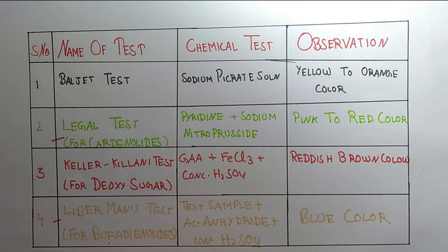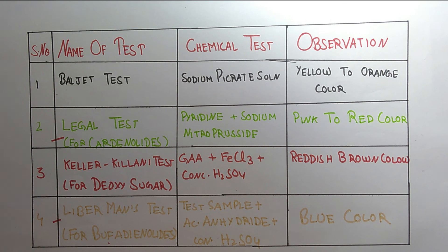These are the four tests for cardiac glycosides. One important drug in this category is digitalis. I hope you liked the video — please subscribe and hit the bell icon for updates on upcoming videos. Thanks for watching.